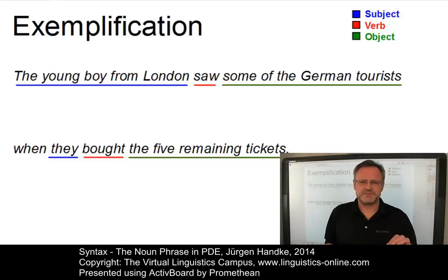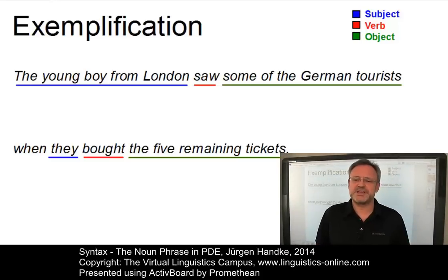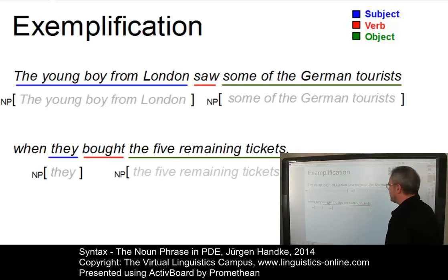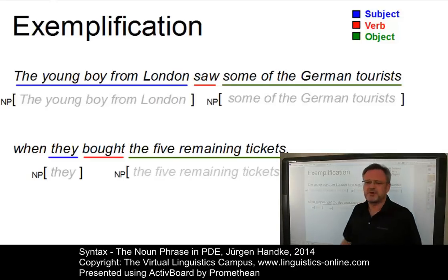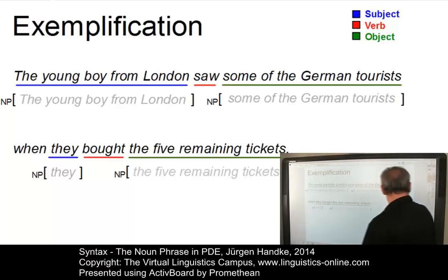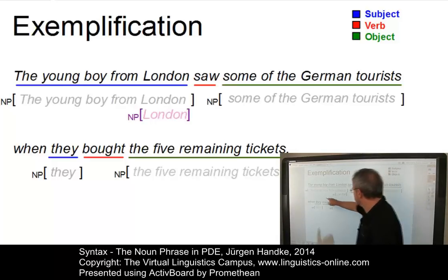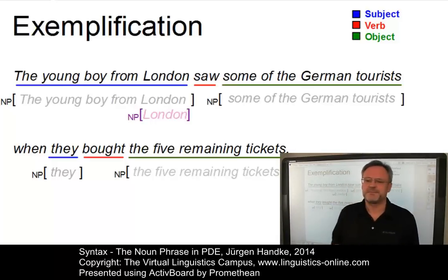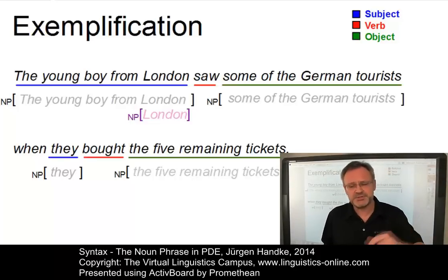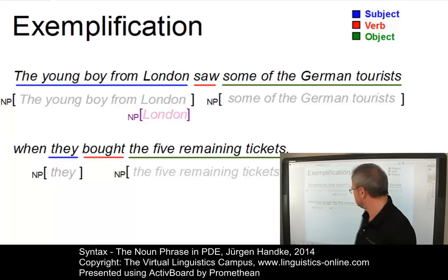This sentence, with its two clauses, exhibits four noun phrases of different degrees of complexity. In fact, we could even postulate five noun phrases, since the first noun phrase, 'the young boy from London', is a noun phrase which is post-modified by a prepositional phrase where the prepositional head is supplemented by the simple noun phrase 'London'.